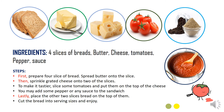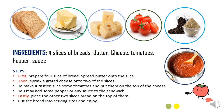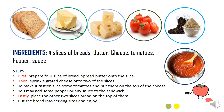Agar lebih berasa dan segar rasanya, masukkan atau taruh irisan tomat dan letakkan di atas kejunya. You may add some pepper or any sauce to the sandwich — bisa juga ditambahkan lada atau merica ataupun saus ke dalam sandwich. Lastly, place the other two slices on top of them — terakhir tambahkan dua potong roti di atas potongan yang pertama. Cut the bread into serving sizes and enjoy — kemudian potonglah roti dengan ukuran yang sesuai dan bisa langsung dinikmati.